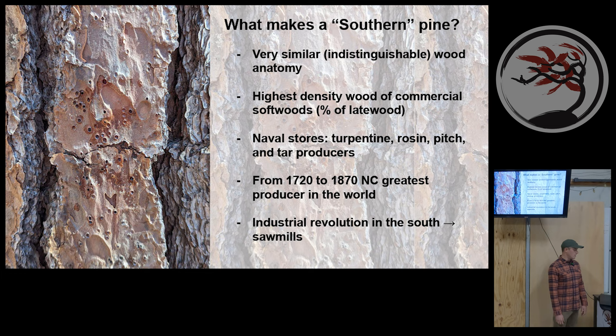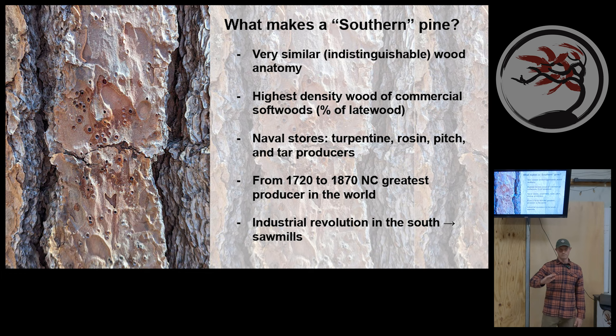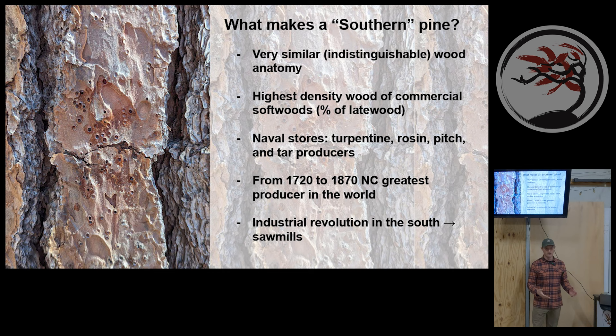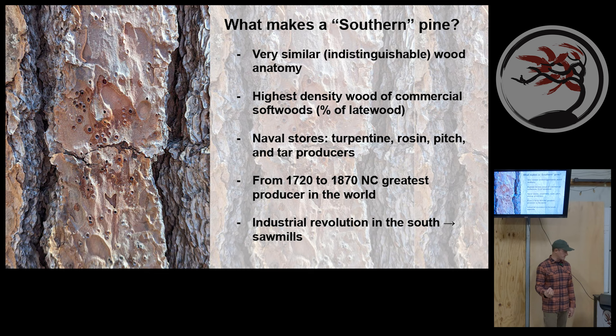One of the reasons southern yellow pines are so valued is their high percentage of latewood. Earlywood grows faster during the warmer months and is lighter, while latewood — occurring later in the season when temperatures are cooler and there's less water — is denser. The tracheids, the tubes transporting water, are larger in earlywood and smaller and more tightly packed in latewood. Southern yellow pines have a very high percentage of this dense latewood.